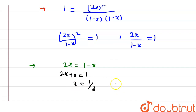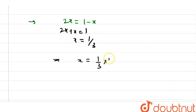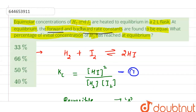The value of x is 1/3, meaning one-third of the initial concentration of reactant is converted into product. Converting to percentage: (1/3) × 100% ≈ 33%. Therefore, option 1 is the correct answer: 33% of the initial concentration of H₂ has reacted at equilibrium.